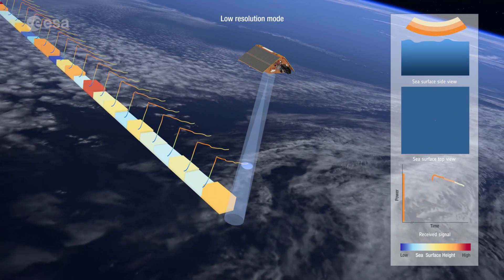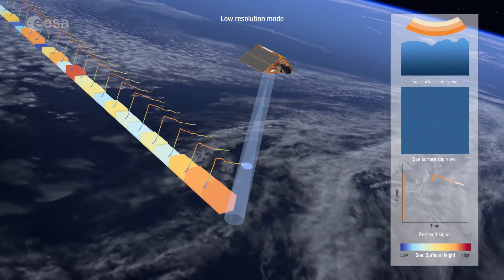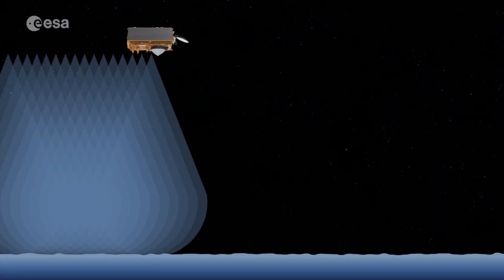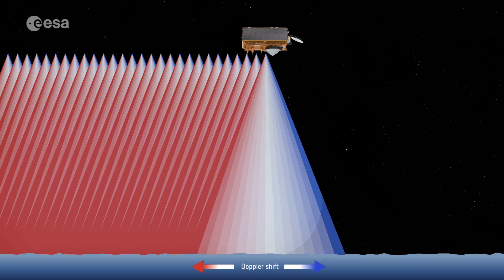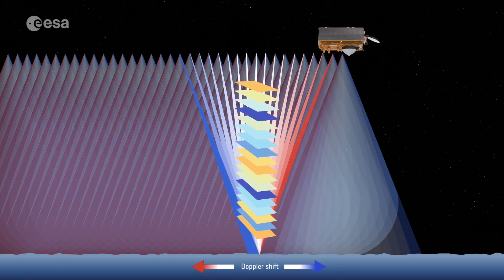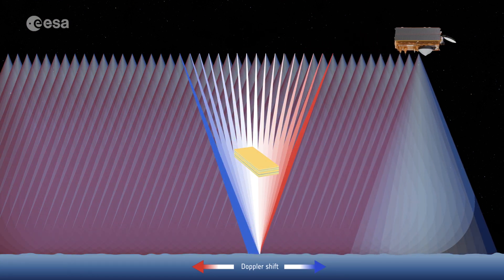Unfocused synthetic aperture radar processing exploits the Doppler characteristics of the return echoes. Synthetic azimuth beams are formed and steered to a specific location on the Earth's surface to build a stack of waveforms.